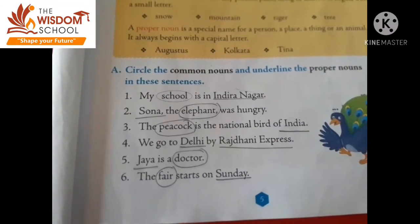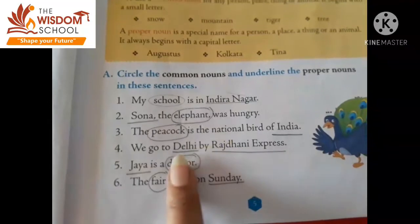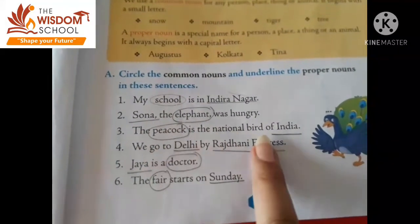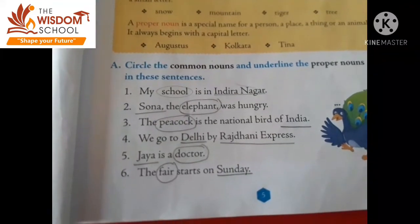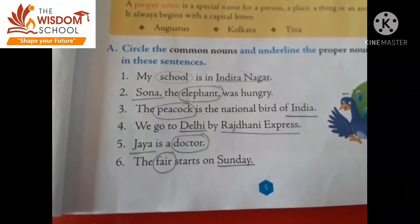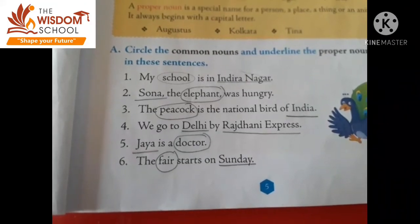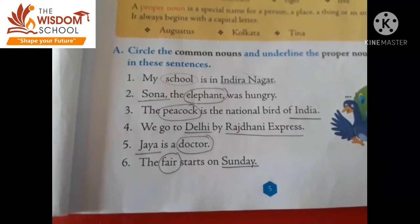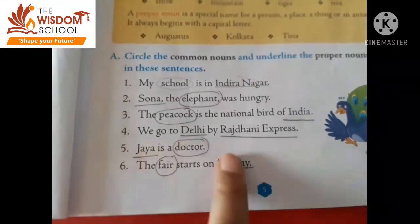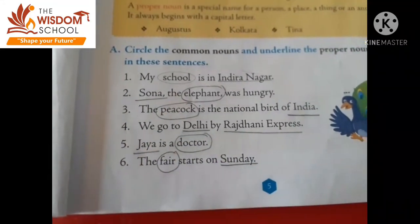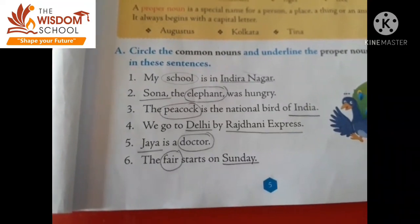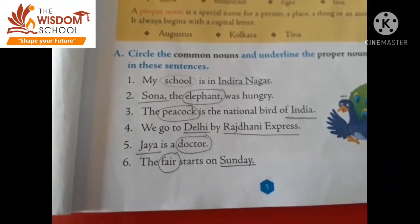We go to Delhi by Razzani Express. Delhi ka D capital hai aur Razzani ka R capital hai — ye dono kya hain? Proper noun hain. Delhi ek particular city hai aur Razzani Express ek particular train hai. Fifth — Jiya is a doctor. Doctor to bahut saare hote hain, so Doctor is a common noun. But the name of the doctor is Jaya, so Jaya here is a proper noun.